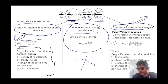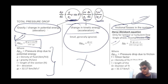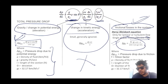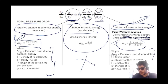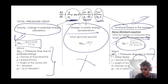The Darcy-Weisbach equation is applicable only for single-phase incompressible fluid. In the frictional pressure loss equation, ΔP_f is the pressure drop due to friction, f is the friction factor, ρ is the density, L is the length of section, D is the diameter of tubing, and gc is the constant. Units are very crucial when solving numericals.